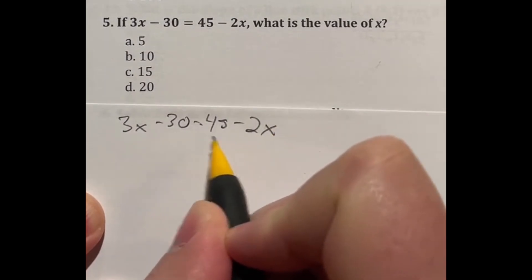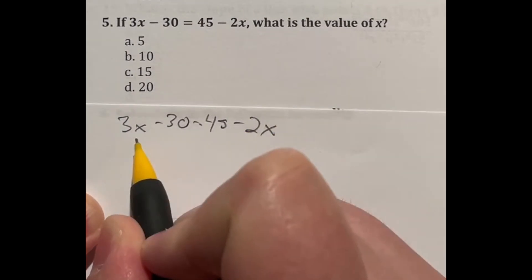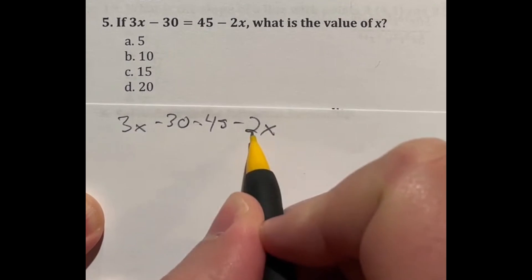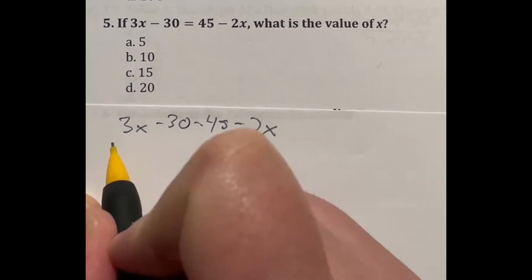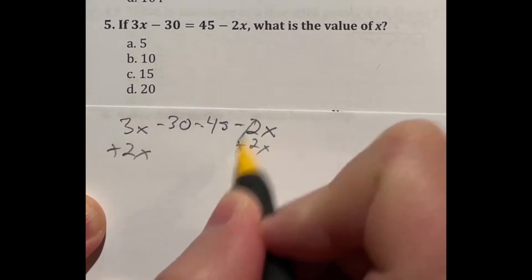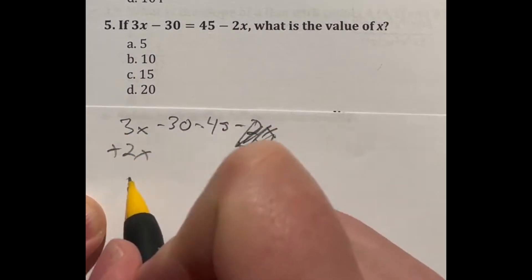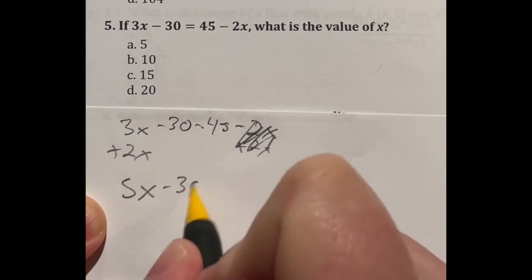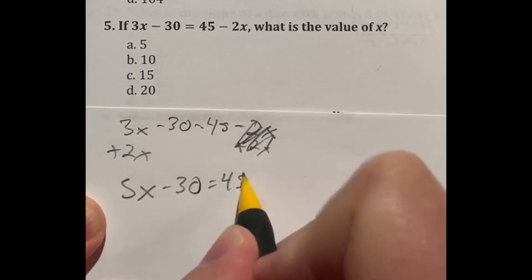Now I'm going to, like I said, get all of my x terms to the same side. Now, because this is all one term, we can move it together. So I'm going to add this 2x to both sides. And that's going to cancel it out over here, leaving me with 5x - 30 over here, equal to 45.